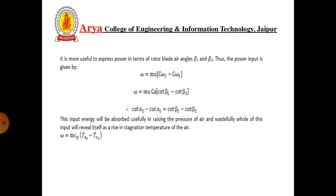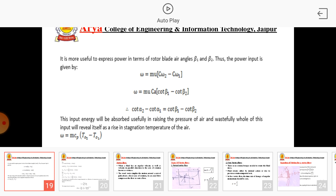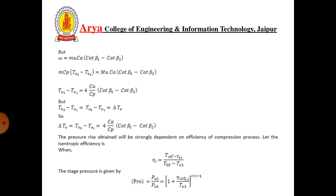The input energy will be absorbed usefully in raising the pressure of the air and wastefully in overcoming friction, all of which reveals itself as a rise in stagnation temperature: W = m·cp(T02 − T01). Therefore, m·U·Ca(cot β1 − cot β2) = m·cp(T02 − T01), giving ΔT0 = T02 − T01 = U·Ca(cot β1 − cot β2)/cp.